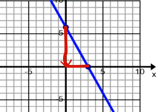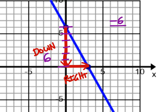This one's going to go down and to the right. Starting from this point, counting down: one, two, three, four, five, six — we went down six, so as a rise that would be negative six. And then the run to the right, starting here: one, two, three — that would be a positive three. All we need to do is simplify the fraction to find the slope. Negative six divided by positive three is negative two. So negative two is the slope.